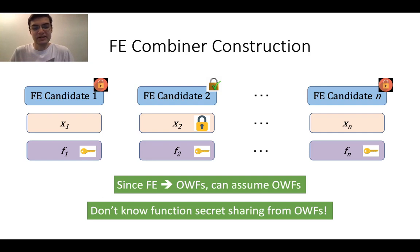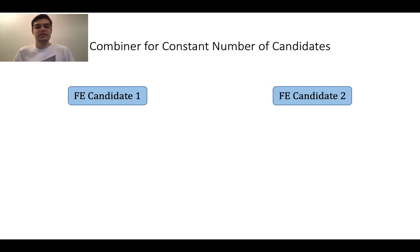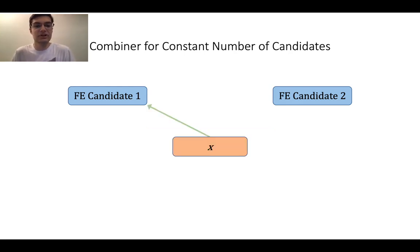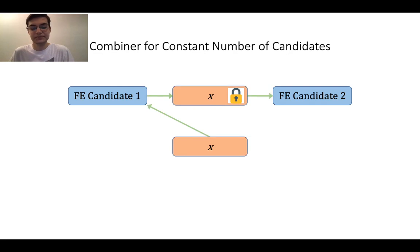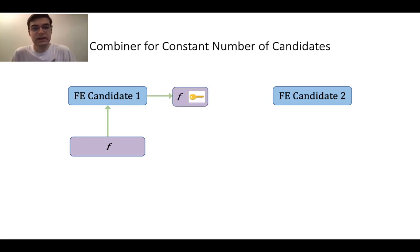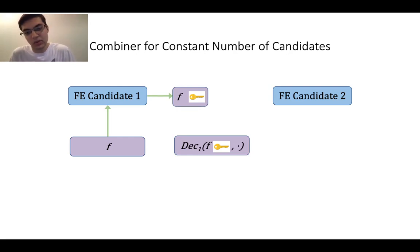However, this isn't the end of the world, because we have another idea. There's an easy way to obtain a combiner for a constant number of candidates. With two candidates, you simply nest them together: to encrypt a message x, you first encrypt it under candidate 1, then take the resulting ciphertext and encrypt that under candidate 2, so the message is doubly encrypted. To generate a function key for f, you first generate a function key for f with respect to candidate 1, and then consider the function that runs the decryption functionality of candidate 1 using this function key, and generate a function key for that function with respect to candidate 2.